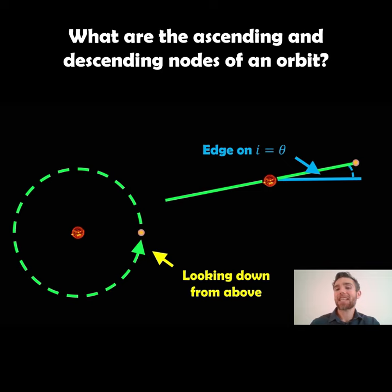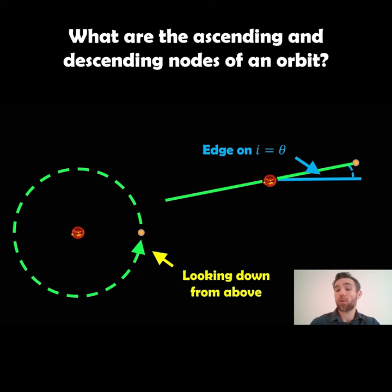If the orbit has some inclination angle it would look like this on the right. If we assume that the blue line is our plane of reference, then if the orbit has some inclination it will have some angle to that plane, like here.